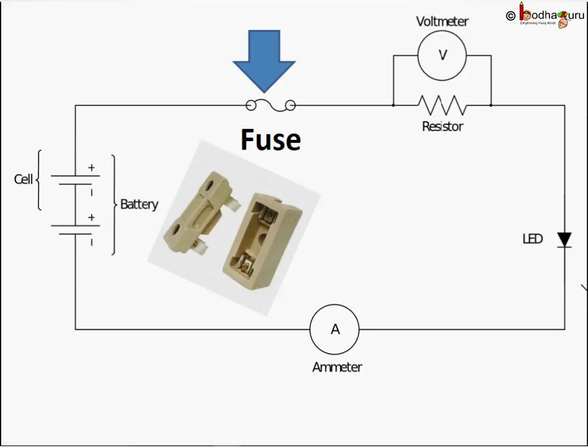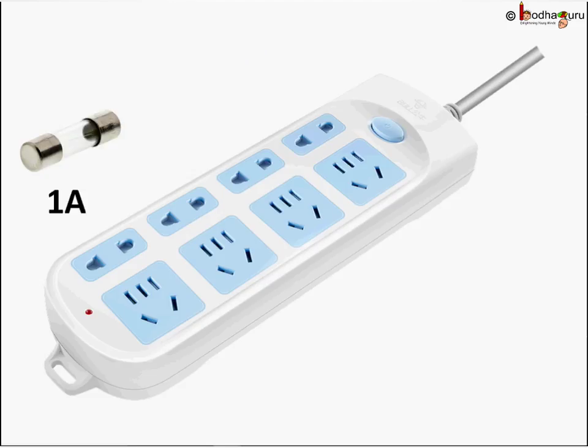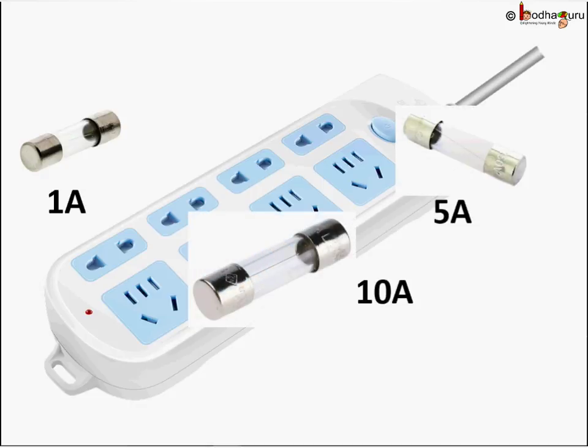The fuses used for domestic purposes are rated as 1 amp, 2 amp, 3 amp, 5 amp, 10 amp and it will break the circuit if current greater than that value flows through the circuit for prolonged time.